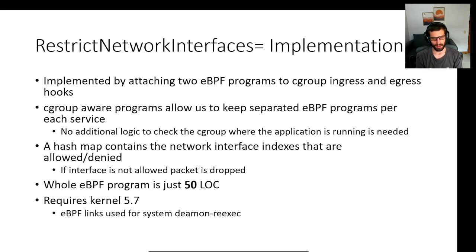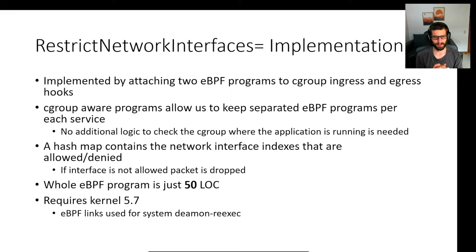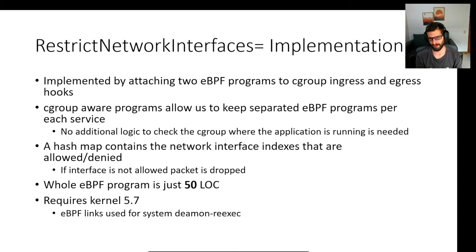Regarding implementation, we attach two eBPF programs to the cgroup ingress and egress hooks of the systemd service. What's nice about per-cgroup eBPF programs is that we keep separate programs for each systemd service, so we don't have to worry about which cgroup an application is running in — that's implicit. To determine if a network interface is allowed, we use a hash map storing the different network interface indices. If the interface is not allowed, we block the packet.